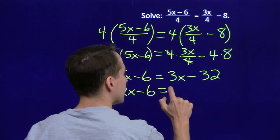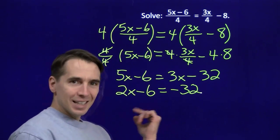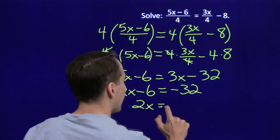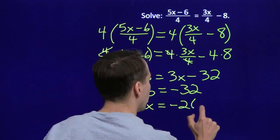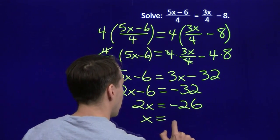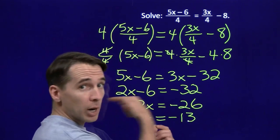We have 2x minus 6 equals negative 32. And then we just add 6 to both sides. That isolates the 2x. We have 2x equals negative 26. And now we just divide both sides by 2. We get x all alone. We get x equals negative 13. And we're done with this problem.